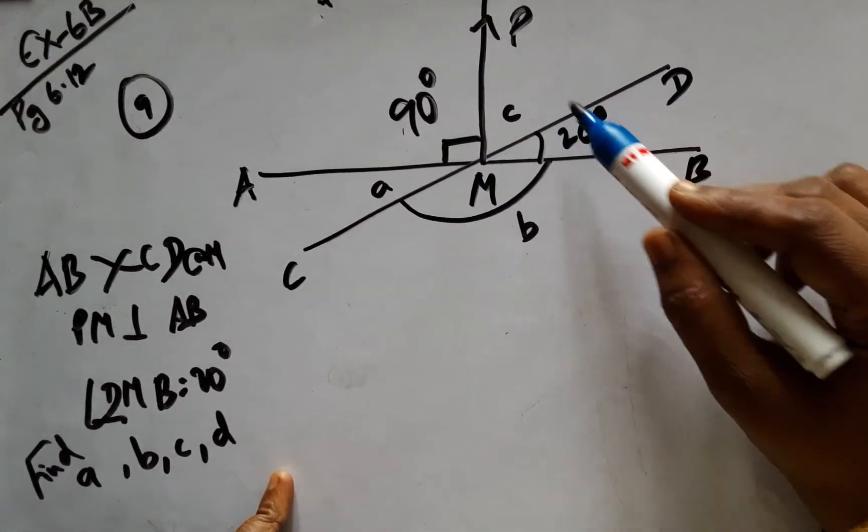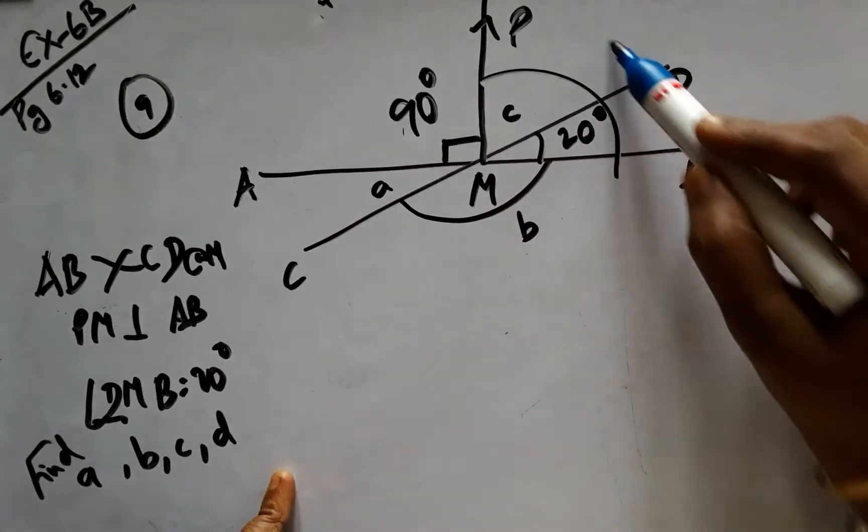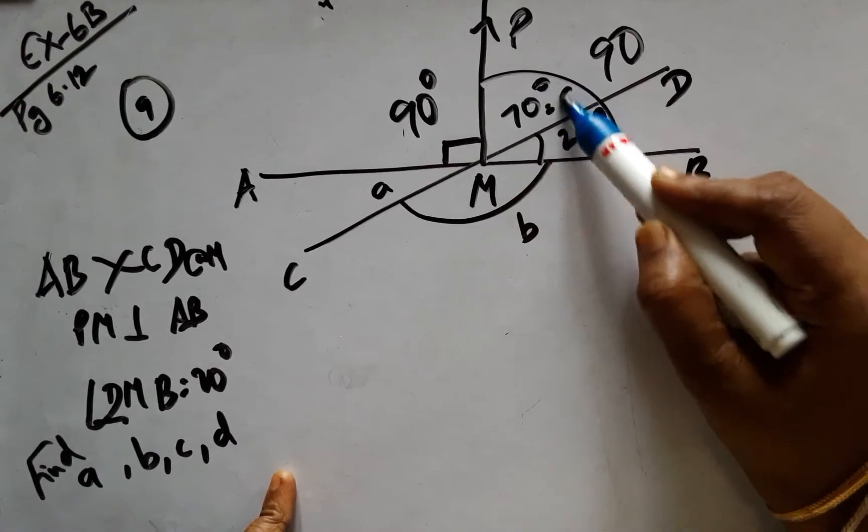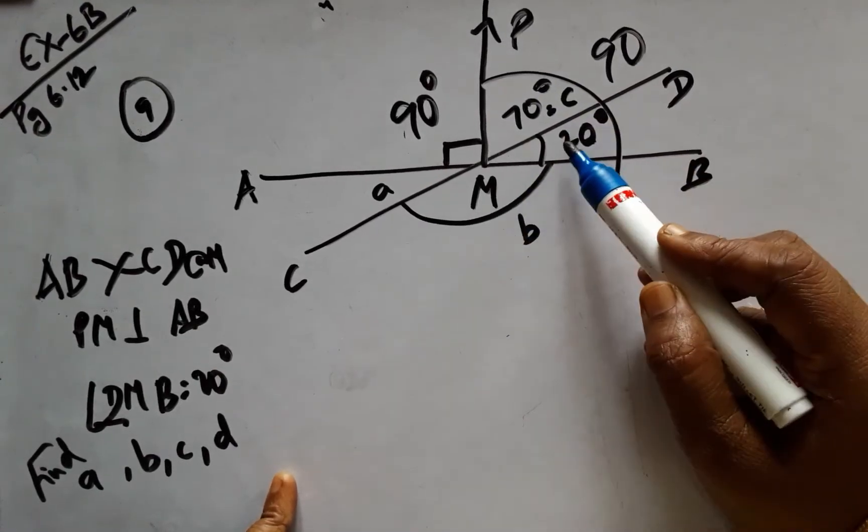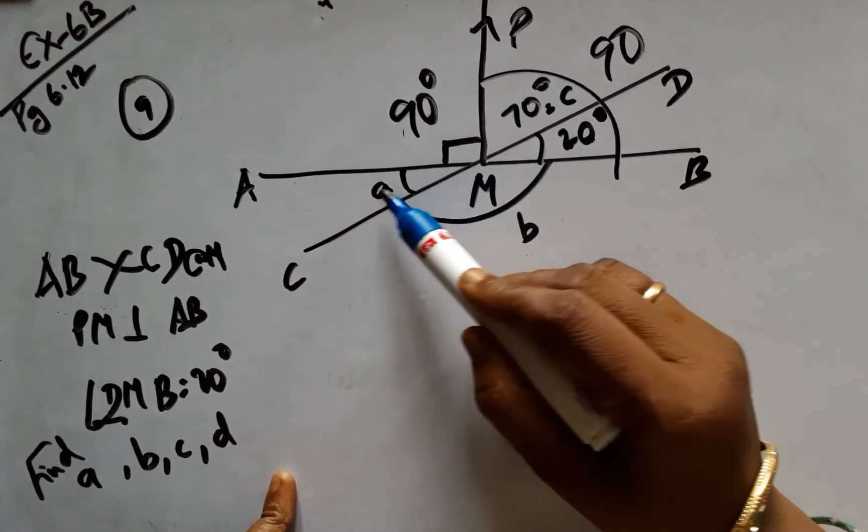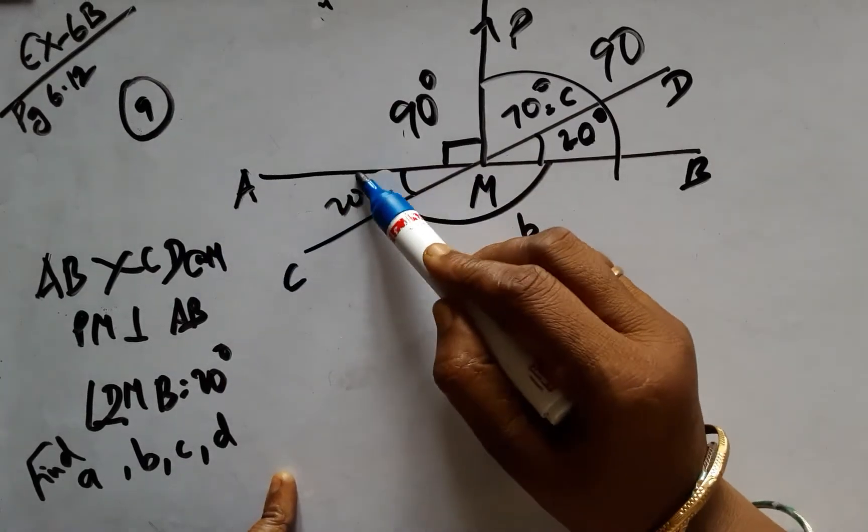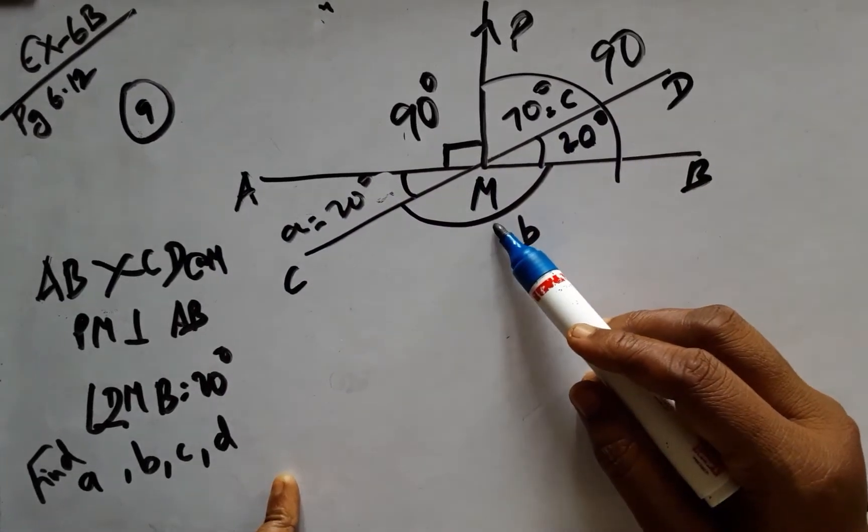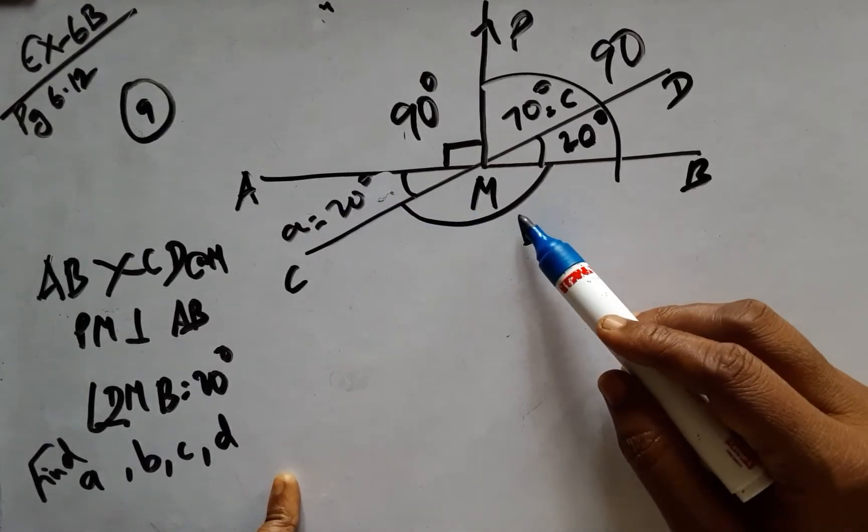Therefore, 90 minus 20 comes to 70 degrees, so C is 70. Now this being vertically opposite to A, A is 20 and C is 70. The remaining thing is these two make up a linear pair.